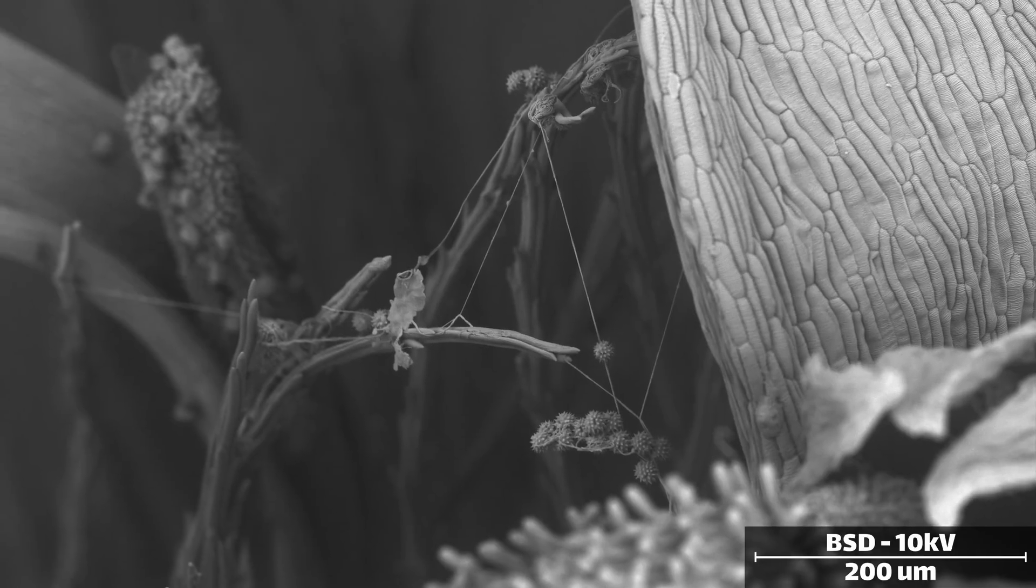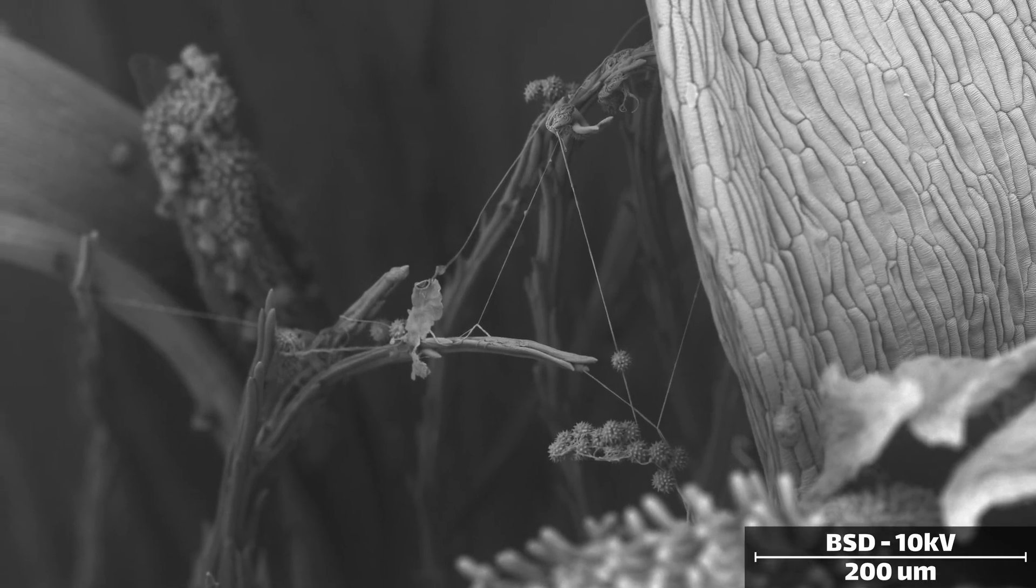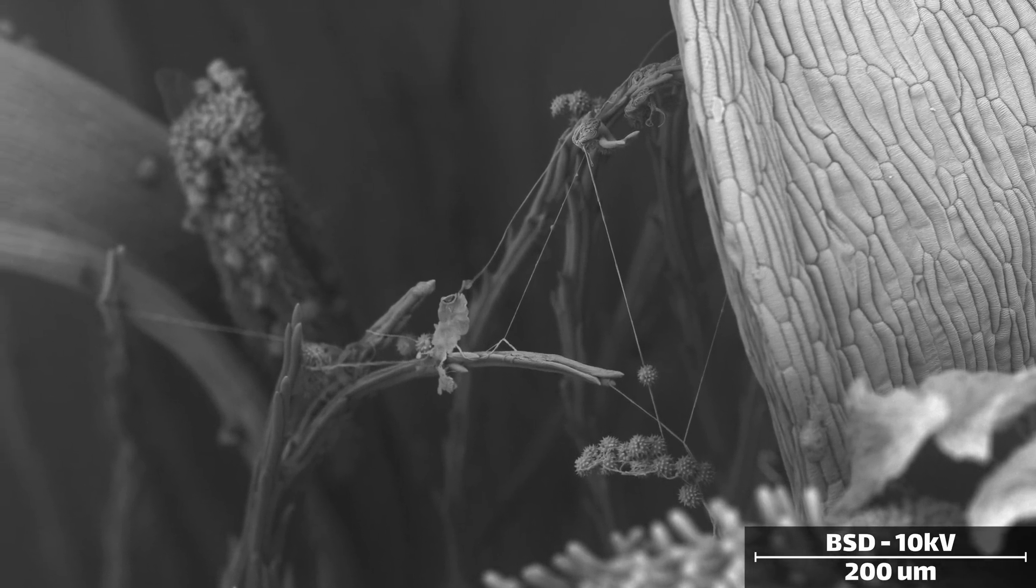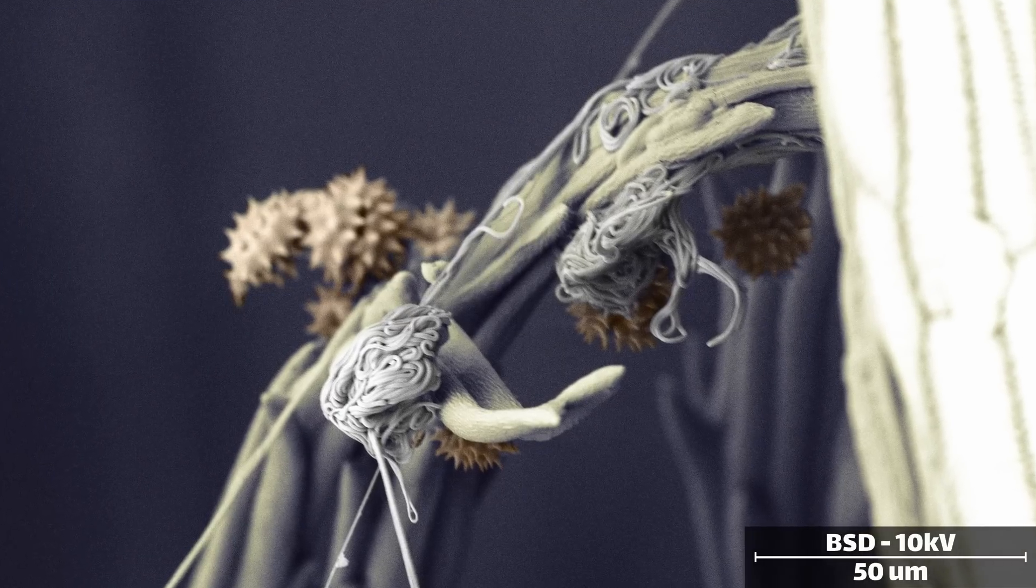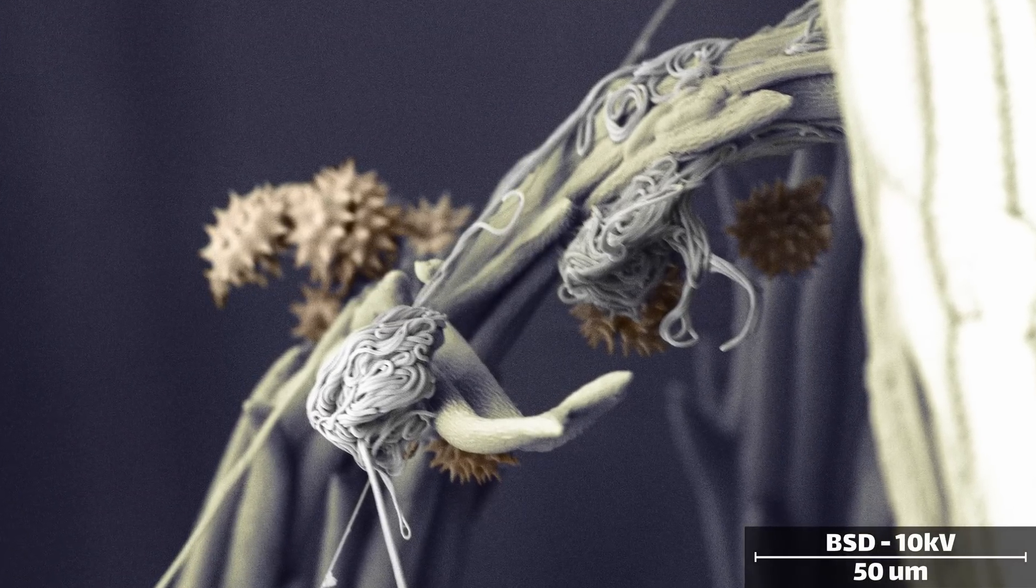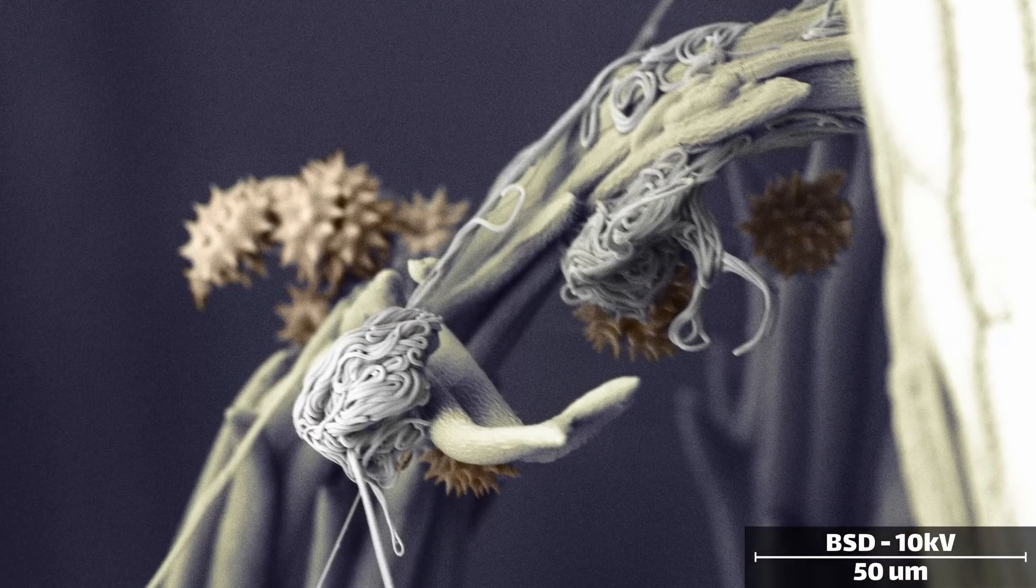Finally, the best part about microscopy is that you often find unexpected surprises. Here is a ball of spaghetti. Well, it's more likely spider silk, which has caught a bunch of pollen instead of insects.